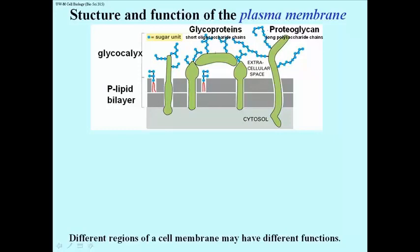Then we have structures called proteoglycans, which are still transmembrane proteins — that is, proteins that pass through the entire phospholipid bilayer — but have longer polysaccharide chains attached. These much longer glycoside-linked sugar chains differentiate proteoglycans from glycoproteins.